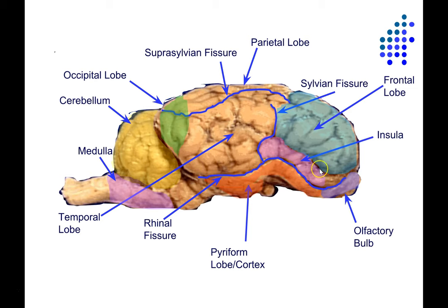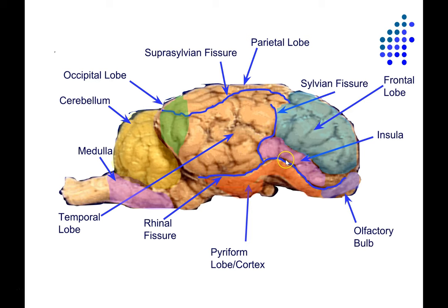Here we have a special patch of cortex called the insula or insular cortex. You can't see the whole thing — part of it is buried in the sylvian fissure, continuing underneath the overlying temporal lobe. In humans, the insula is completely obscured on the lateral view because it's entirely covered by the frontal lobe and temporal lobe, which continued to grow over evolution. Just as part of the insula is buried in the sylvian fissure in the sheep, in us the entire insula is buried deep inside the sylvian fissure.